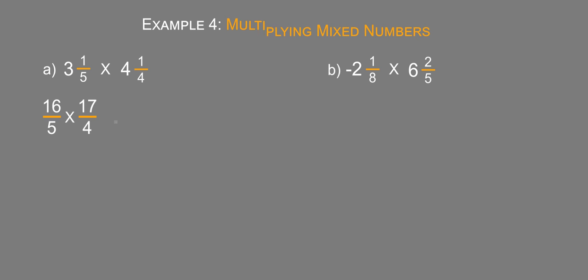So we multiply across the top, multiply the numerators, and we multiply across the bottom, five times four. Now what I'm going to do is take a step back and use a trick that will make this a little simpler.